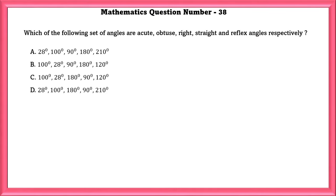Mathematics question number 38. Which are the following set of angles are acute, obtuse, right, straight and reflex angles respectively. We will first start with option A. Option A first they are saying that acute angle is 28 degree. Yes this is true because acute angles are more than 0 degree but less than 90 degree.